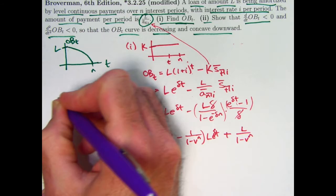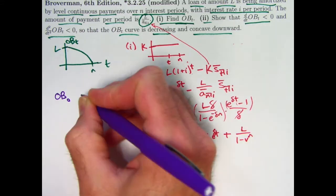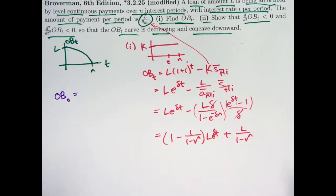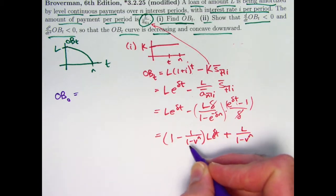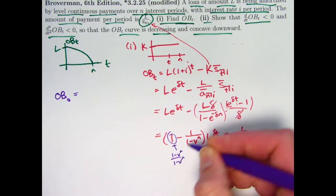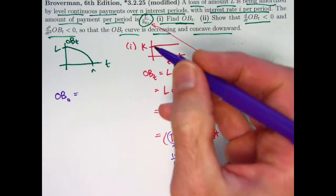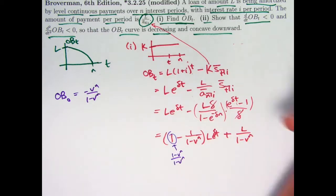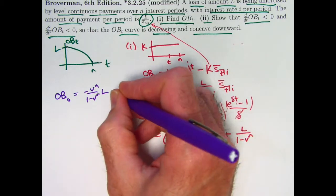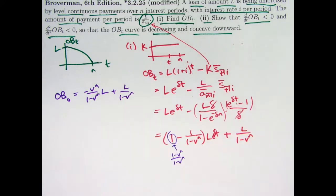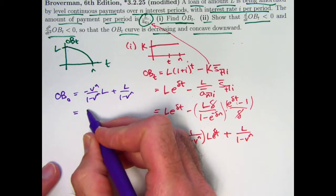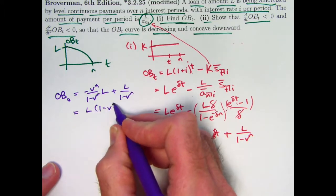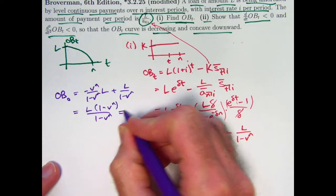To verify the outstanding balance at time zero, plug in t = 0. The e^(δ·0) becomes 1. Getting a common denominator, the 1 from the first term becomes (1 − v^N)/(1 − v^N), so when we combine, the 1's cancel, leaving −v^N/(1 − v^N) · L · 1 plus L/(1 − v^N). Combining over the common denominator and factoring out L, the top becomes (1 − v^N), which cancels with the denominator, giving OB(0) = L, just as expected.